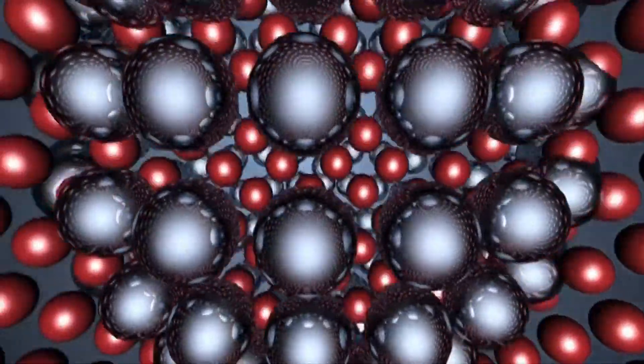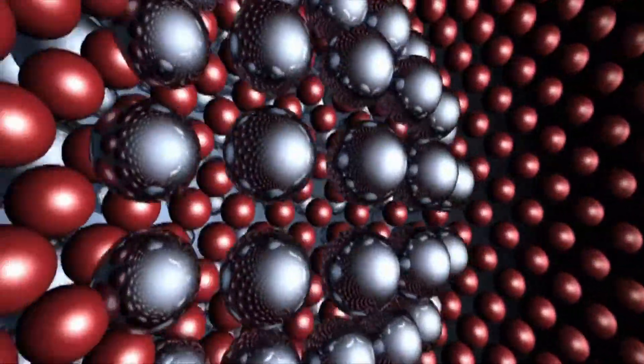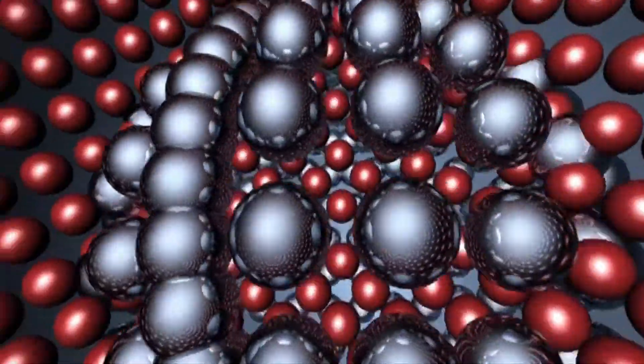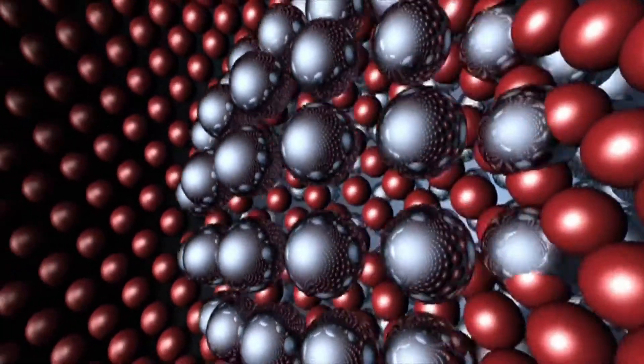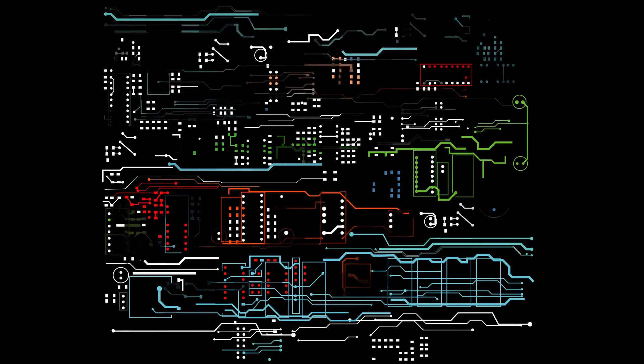This version of the Memristor, developed using the advanced facilities at the Oak Ridge National Laboratory, promises capacity of about 25 terabits per square centimeter. That is 100 times higher memory density per layer compared with commercially available flash memory devices.